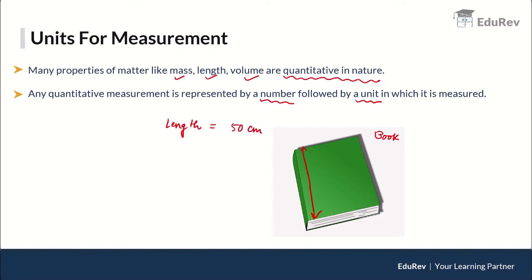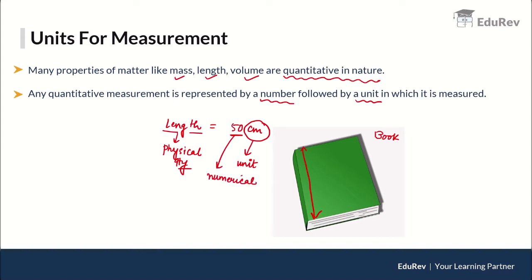So this is my physical quantity which we are measuring. The numerical value represents how many, and the unit tells us in which unit it is expressed. So 'centimeter' represents the unit and '50' represents the numerical value. If we convert, that comes out to 0.5 meters — so both the numerical value and the unit change.